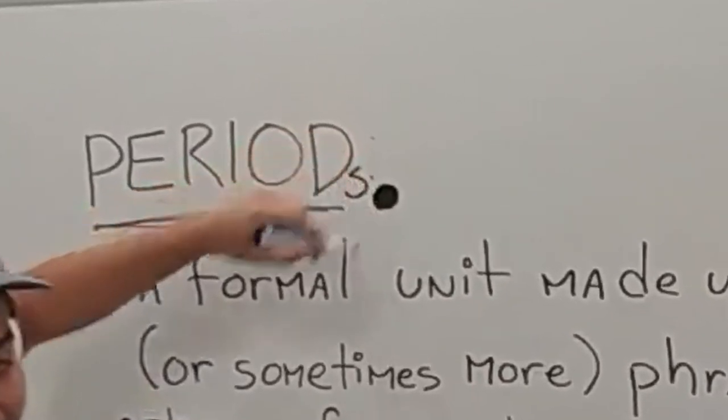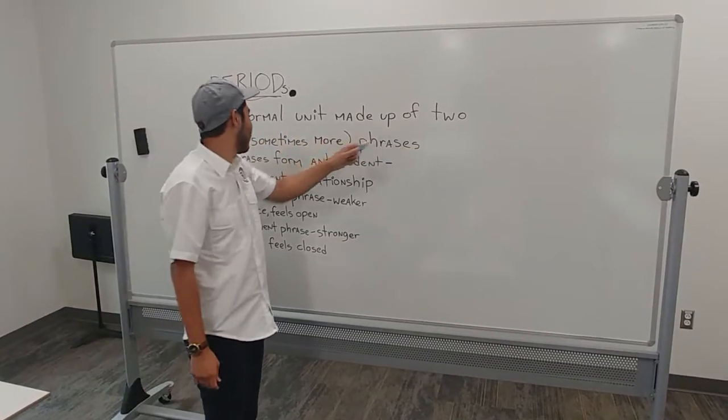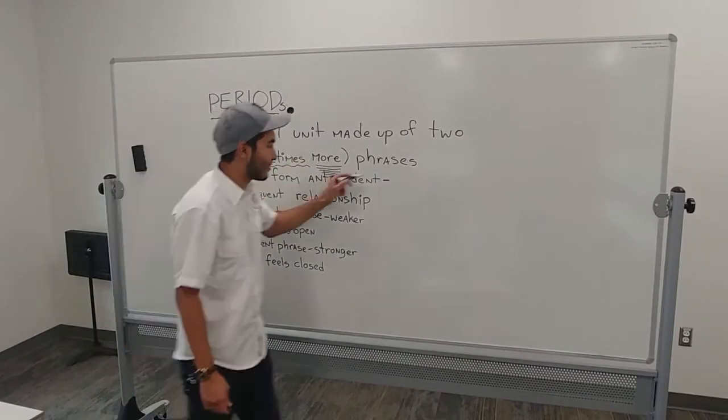Alright, we get it. A formal unit made up of two or sometimes more phrases.